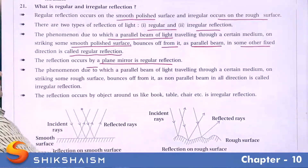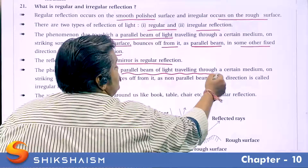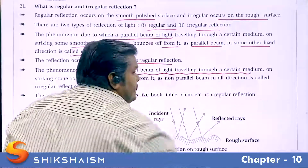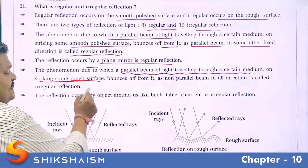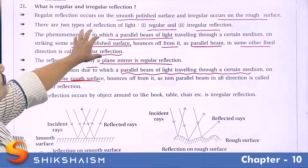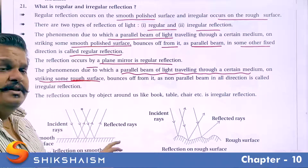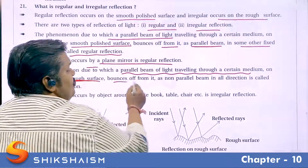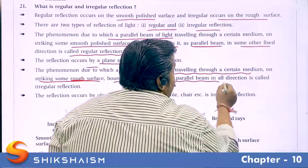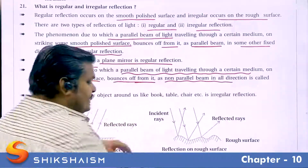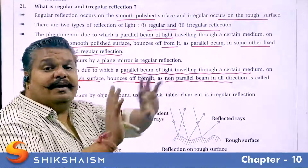The phenomenon due to which a parallel beam of light travels through a certain medium but on striking some rough surface — note the difference: here we have a smooth surface, and here it is a rough surface — they bounce off from it, but the reflected beam is not parallel.